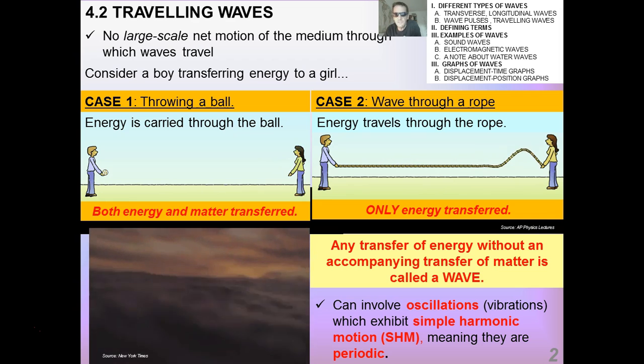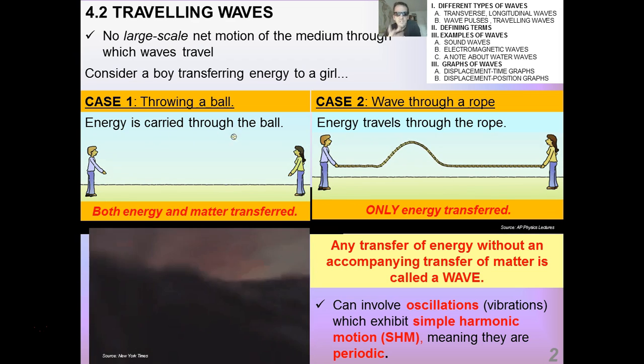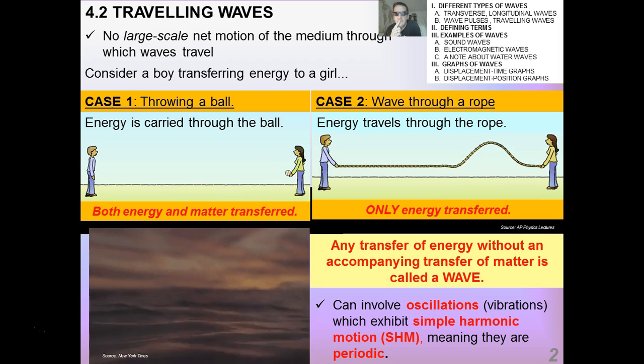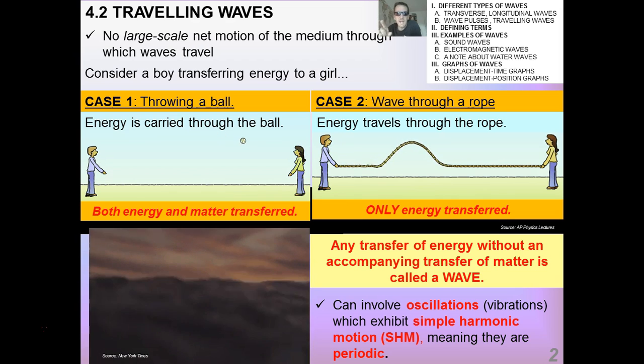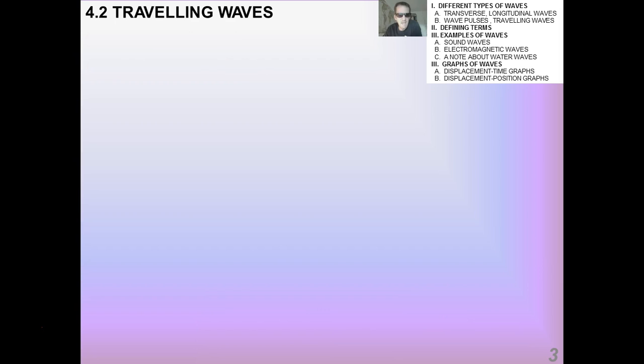And again, we talked about oscillations, which are periodic vibrations. And we talked a bit about simple harmonic motion. We'll talk more about that. Any vibration or oscillation that is simple harmonic is periodic, which means it can be characterized by period T and frequency F.